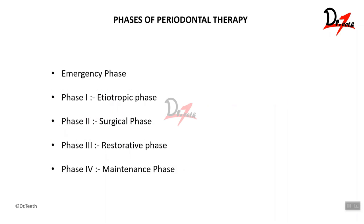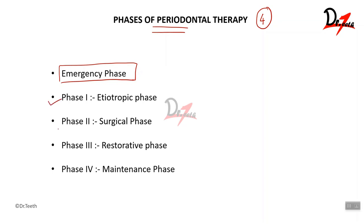Now let's see the phases of periodontal therapy. We have four major phases of periodontal therapy, and apart from the four phases we have one additional phase called the emergency phase. In the emergency phase we treat all emergency conditions, following which we come to phase one — the etiotropic phase — phase two, the surgical phase, phase three, the restorative or prosthetic phase, where we concentrate on giving prosthesis or restorations, and phase four, the maintenance phase.